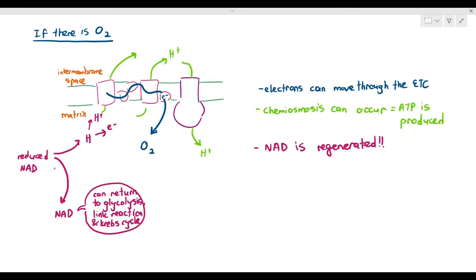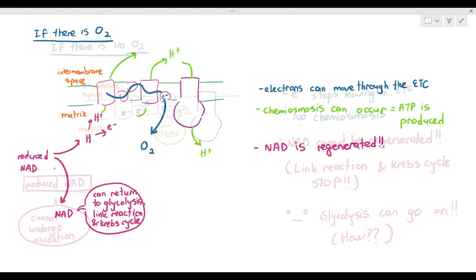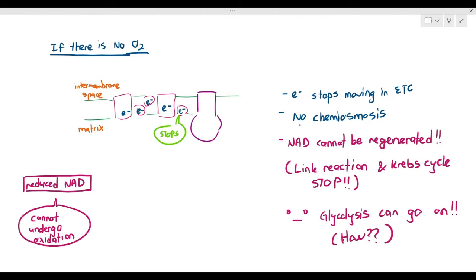When you regenerate the NAD, that NAD can go back to glycolysis, the link reaction, and the Krebs cycle to carry more hydrogen atoms. But what happens if oxygen is not there? The electrons stop flowing in the ETC, hydrogen ions are not pumped into the intermembrane space, and chemiosmosis cannot happen, so you may not be able to regenerate NAD or FAD. Therefore, the link reaction and Krebs cycle stop. But notice — I did not say glycolysis stops.